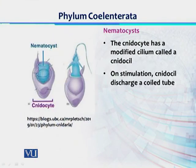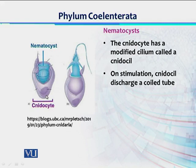If you look at this image, we can see that this particular cell or capsule is called a neidocyte. These neidocytes have those specific cells which are called nematocysts. The neidocytes are covered with an operculum, and the nematocysts are hidden inside these neidocytes.